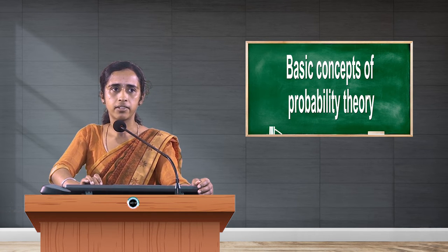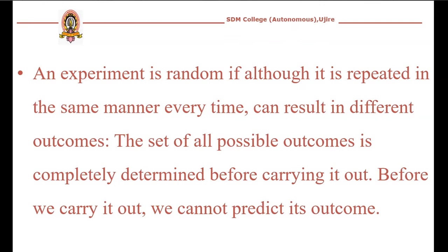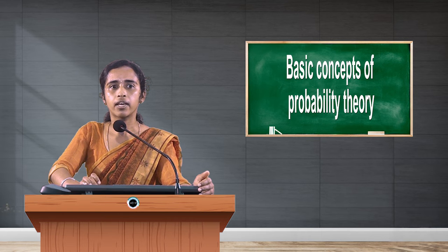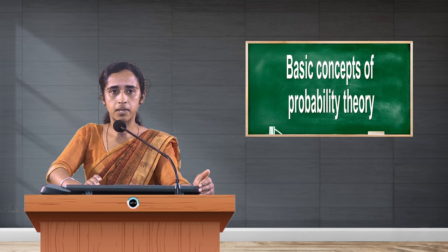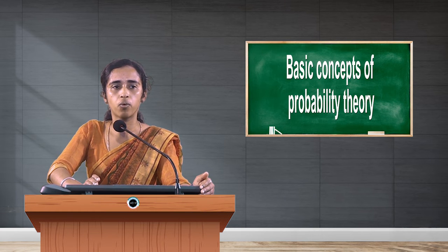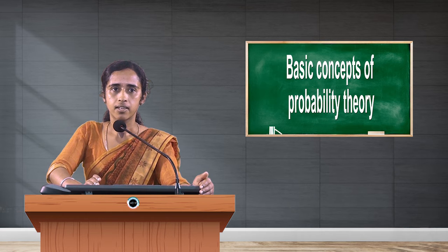A random experiment is one that, although repeated in the same manner every time, can result in different outcomes. The set of all possible outcomes is completely determined before carrying it out, but we cannot predict its outcome beforehand. Our probability theory is based on this random experiment — probability theory deals with the uncertainty of the experiment.